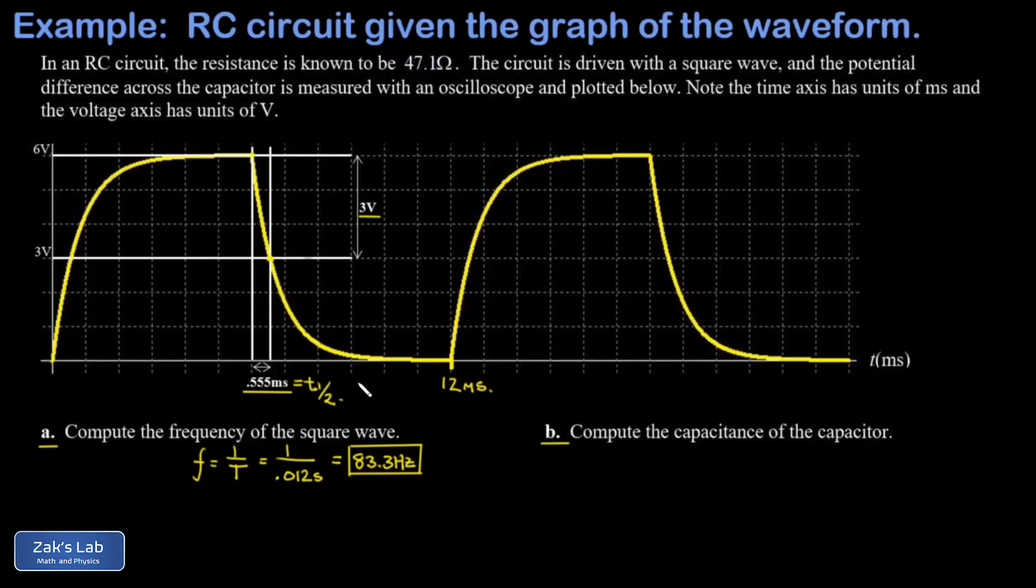And the half-life of an RC circuit is related to the resistance and the capacitance. So I'm going to write down the formula that I remember for this, that the half-life over the time constant tau is equal to natural log 2. And in an RC circuit tau is equal to the product of resistance and capacitance, so that's RC.